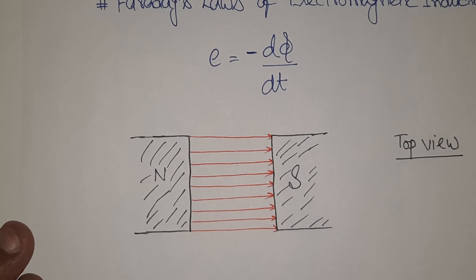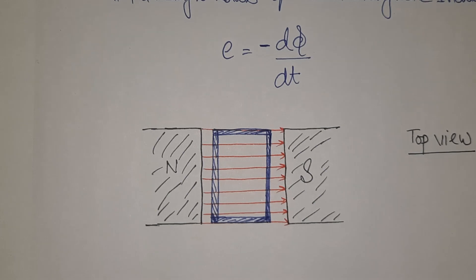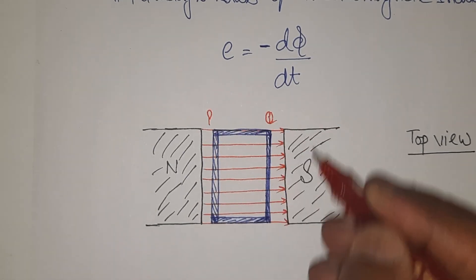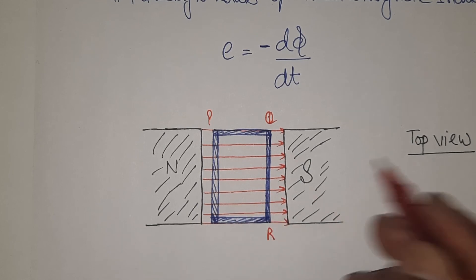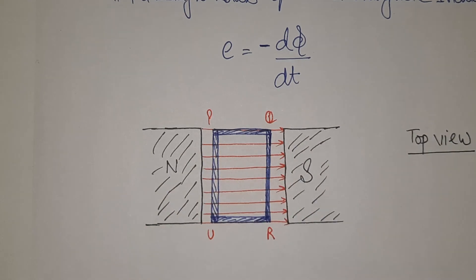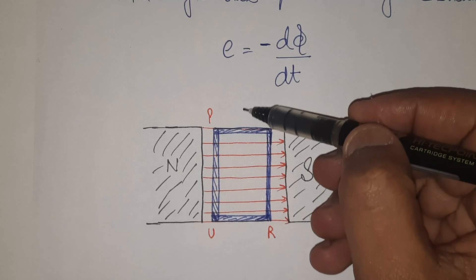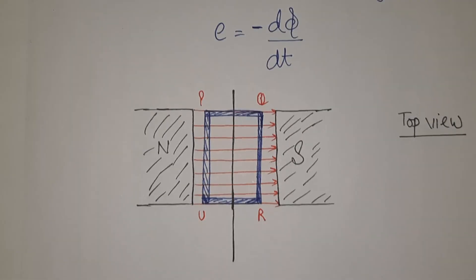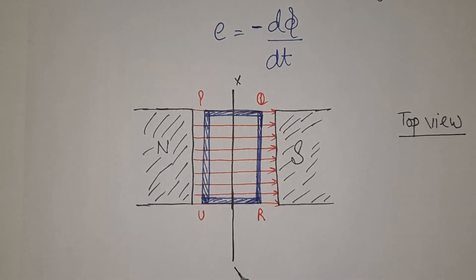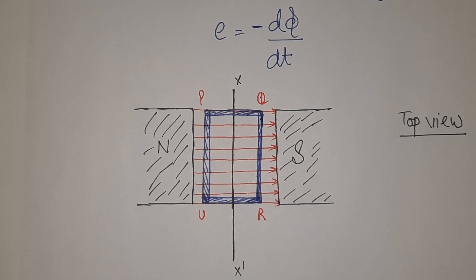Now, in this empty space between north and south, a rectangular coil having N number of turns is placed. This rectangular coil is free to rotate about axis of rotation. Let the axis be x, x prime.